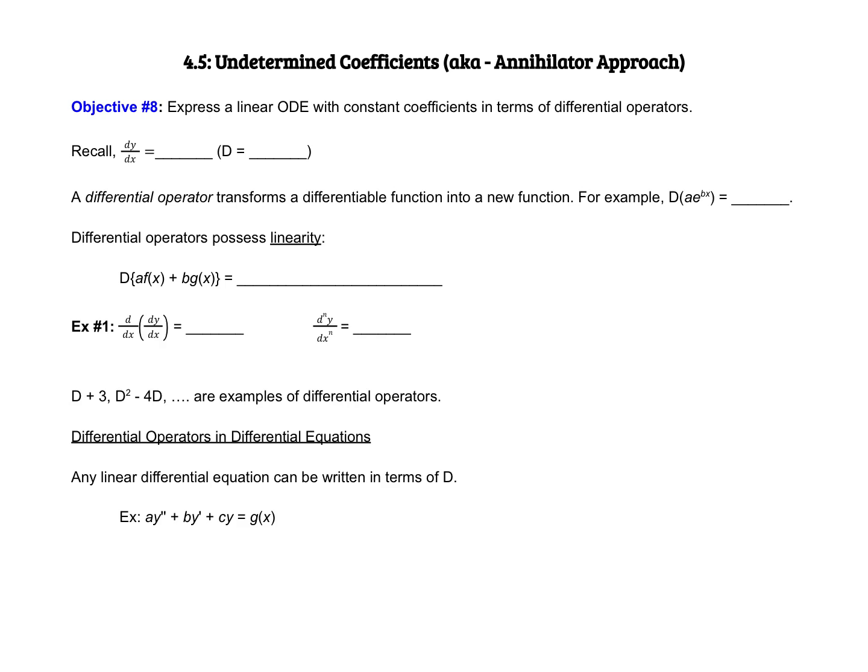Welcome to section 4.5, which covers the method of undetermined coefficients — you might also hear it referred to as the annihilator approach. Before this, we looked at solving homogeneous, linear, ordinary differential equations, and the next thing we're going to do is look at non-homogeneous differential equations.